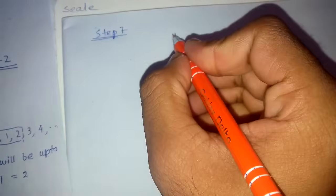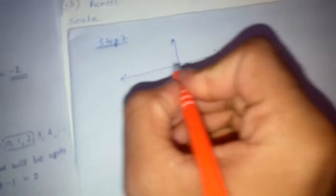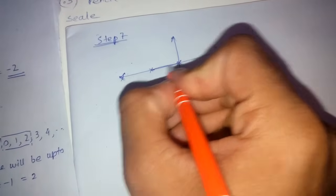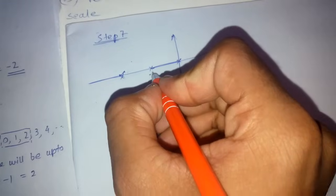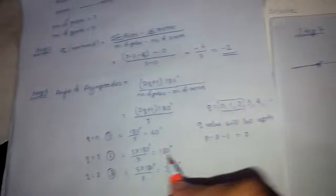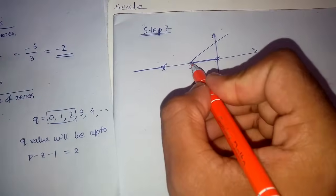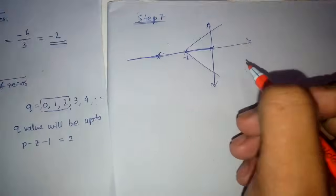Step 7: we roughly sketch the root locus. There are three poles, and the root locus branches are drawn. The centroid is at minus 2. From the centroid we have three angles of asymptotes: 60 degrees, 180 degrees, and 300 degrees. We draw the 60 degree, 180 degree, and 300 degree asymptotes from the centroid at minus 2.